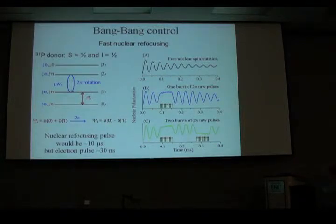And so we can take this a zero plus b one and turn it into a zero minus b one. Which means we can get a refocusing. We can refocus the nuclear spin with an electron spin transition. And the advantage of that is that if we had to do this with an RF pulse on this nuclear spin, at least in our system, that would be about 10 microseconds. Whereas I said we can do this electron spin transition in about 30 nanoseconds. So we have what we need for bang bang, which is a very fast refocusing pulse.